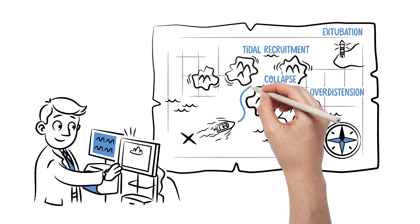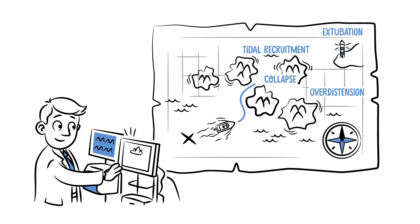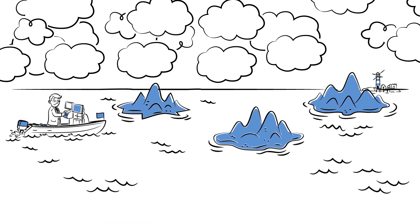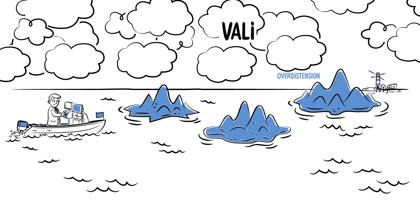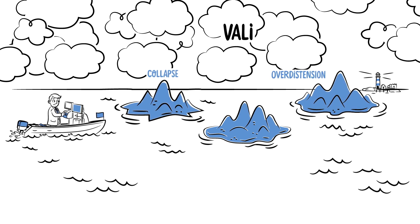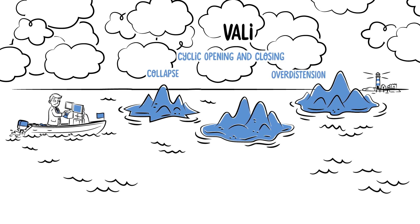In reality, there are many factors which might cause ventilator-associated lung injury, which must be circumnavigated. The main drivers of VALI are over-distention, collapse, and cyclic opening and closing of alveoli.